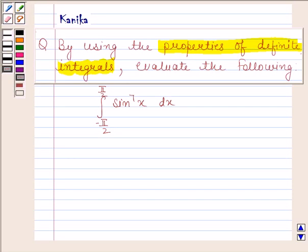Hi and welcome to our session. Let us discuss the problem question. The question says, by using the properties of definite integrals, evaluate the following: integral of sin^7(x) from -π/2 to π/2.